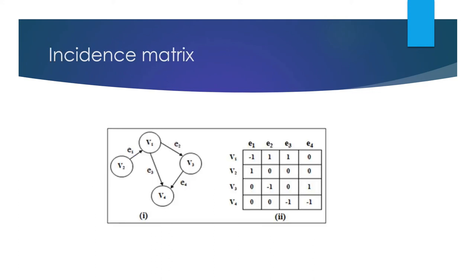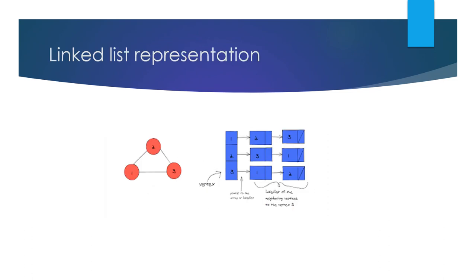Next is incidence matrix. Here v1, v2, v3, v4 are the vertices and e1, e2, e3, e4 are the edges. We represent the matrix between vertices and edges. E1 is coming towards v1, so it is taken as -1; e2 and e3 are going outside v1, so they are taken as 1, 1; there is no connection for v1 and e4, so it is taken as 0. For v2, the only connection is e1, so it is taken as 1 and the remaining are zeros. For v3, v1's direction is towards v3 so it is -1, and v3's direction is towards v4 so it is +1. For v4, e3 and e4 are coming towards v4, so these are taken as -1, and the remaining two edges are zeros. This is about incidence matrix.